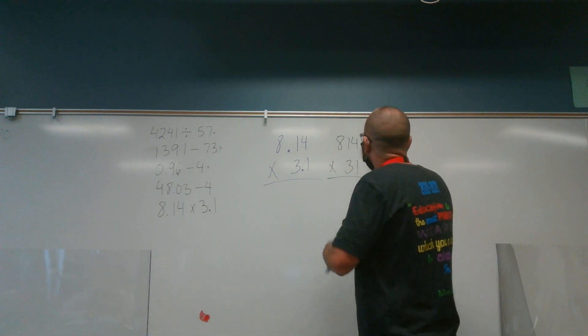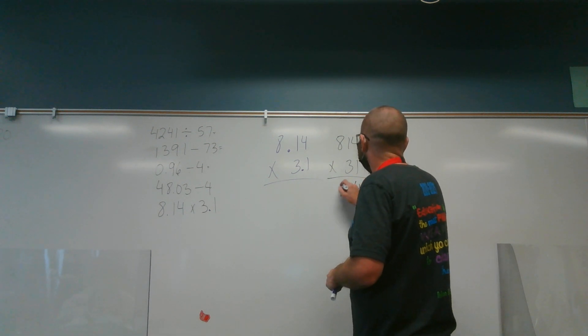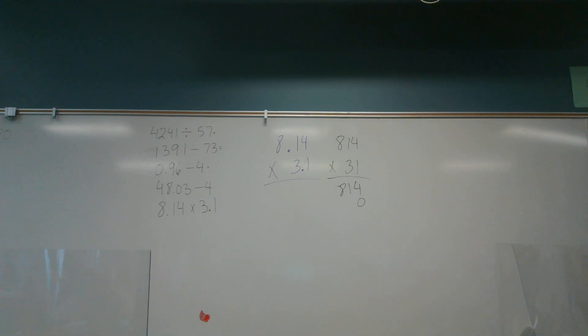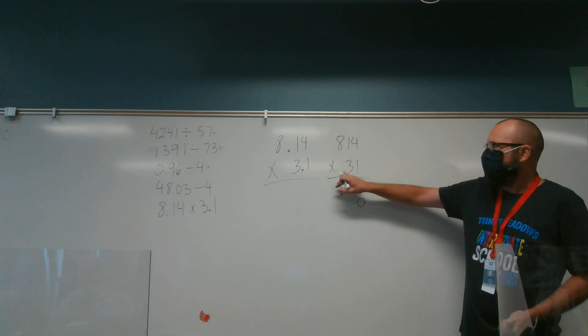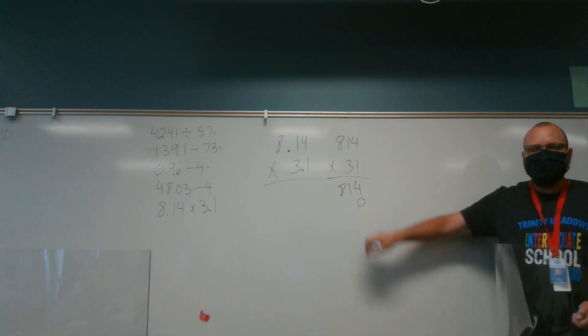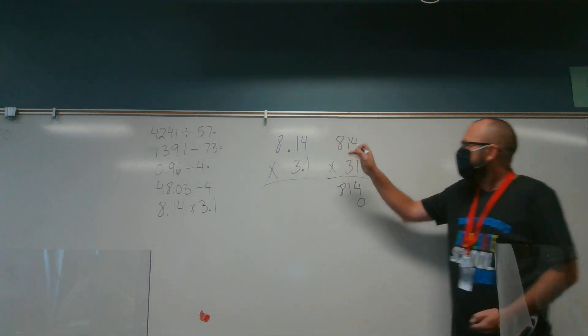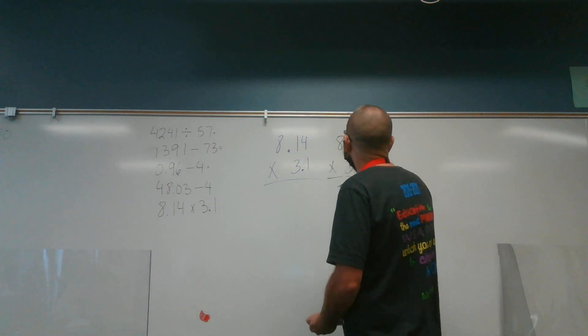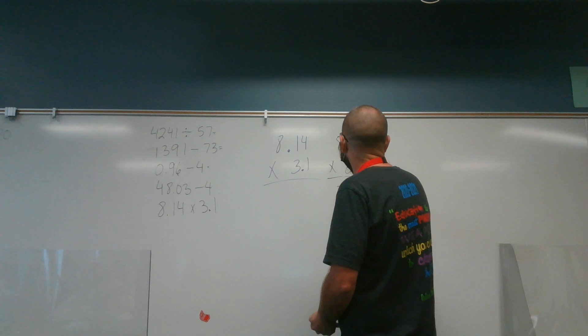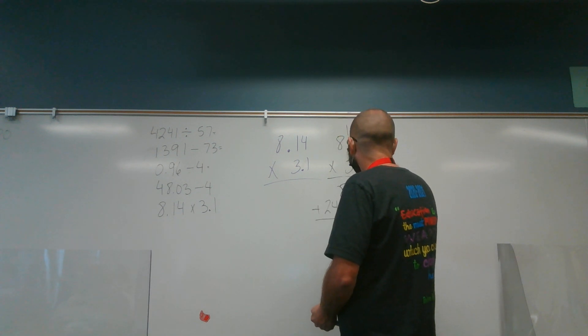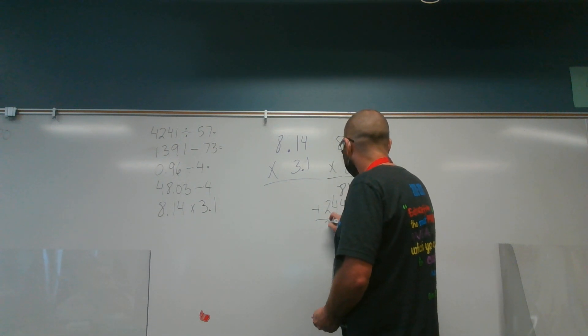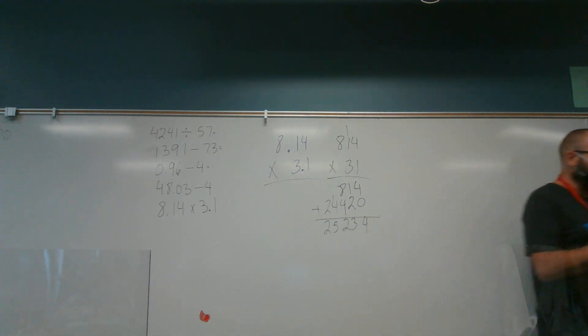And then, obviously, my 1's all the way through are easy. Now I'm moving to my tens place. Don't forget the 0. The 0 because we're moving to the tens place. We're multiplying by 30 now. That's why that 0 comes down, because we're multiplying by 30, not just 3. 3 times 4 is 12. 3 times 1 is 3, plus 1 is 4. 3 times 8 is 24, and I get 25,234.